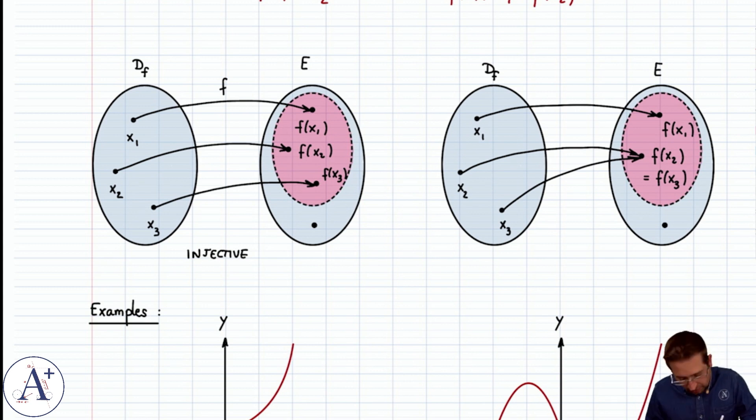Well, that's not allowed, because we have an image that has two pre-images, and so this function is not an injective function.